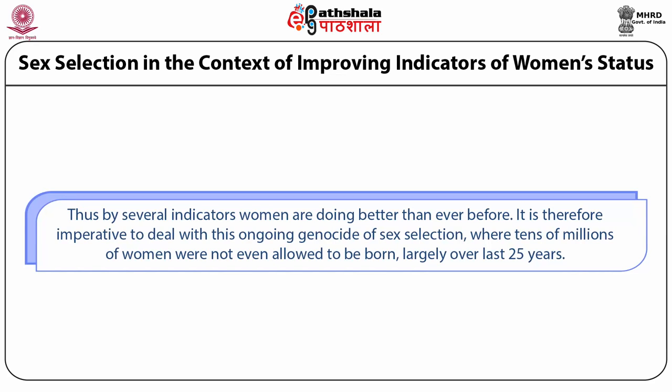By most indicators of women's development, women are doing much better. But if we do not deal with this ongoing sex selection — where tens of millions of girls were not allowed to be born — the intergenerational consequences will last for a very long time. When you look at 15 million missing girls over the last 20 to 25 years, the consequences will be frightening for the next several generations.